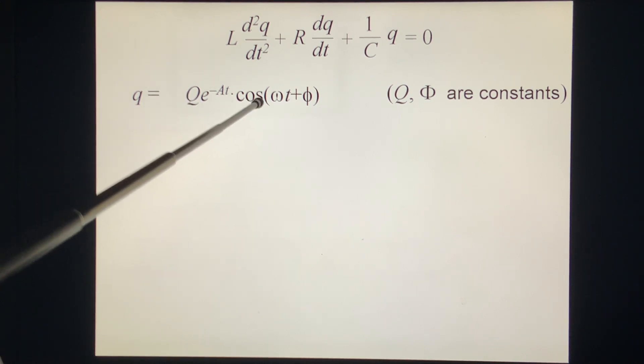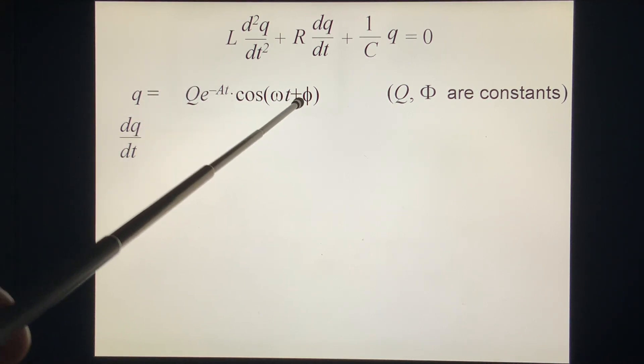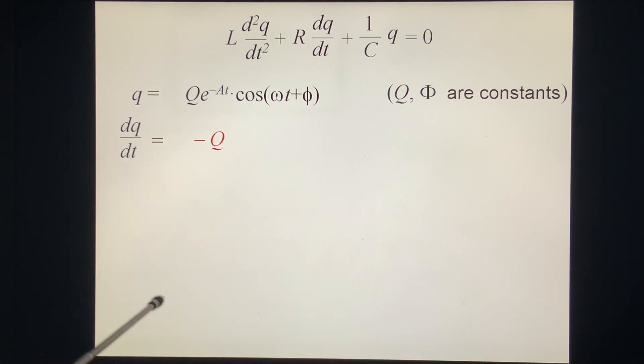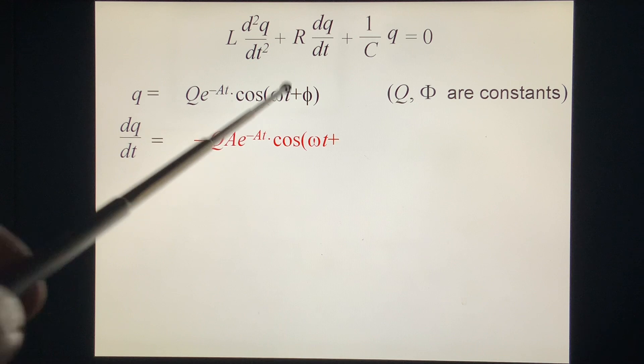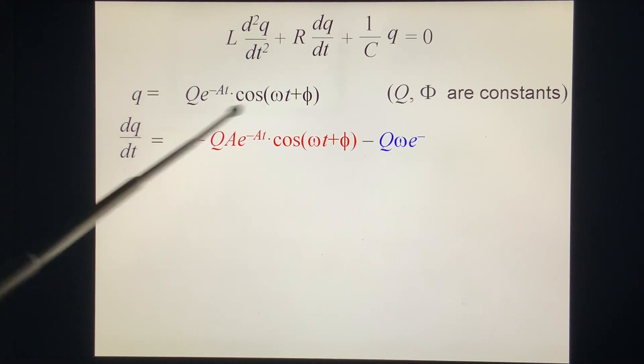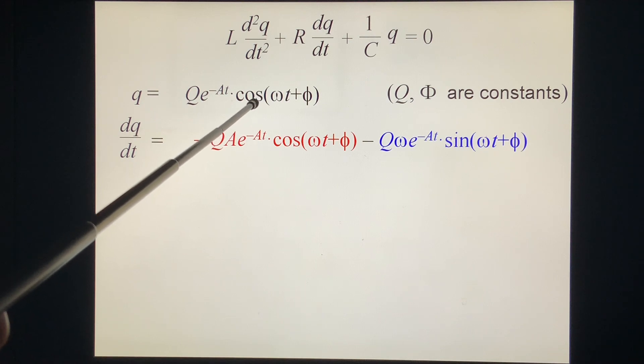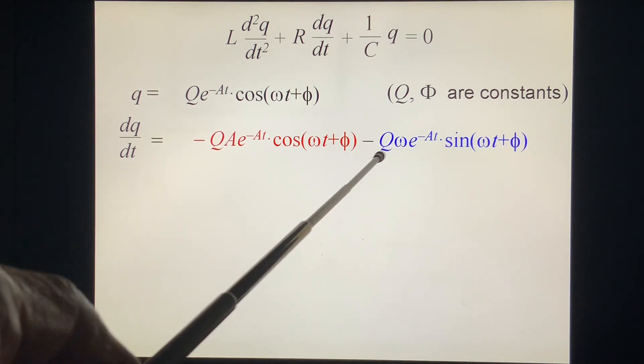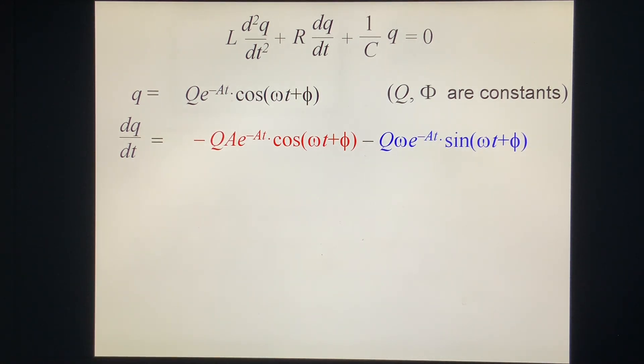Now we do the derivative, dq/dt. You have two terms. The first term you have minus a, minus aQe^(-at)cos(ωt+φ). The second term is Qe^(-at), this is minus sine ωt, this is ω minus sine. And then, this is dq/dt.